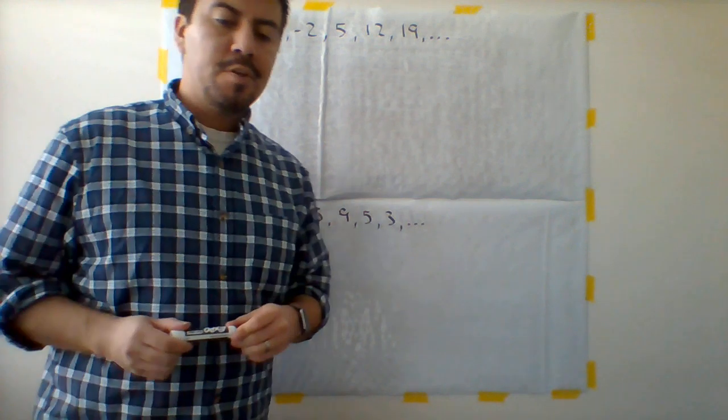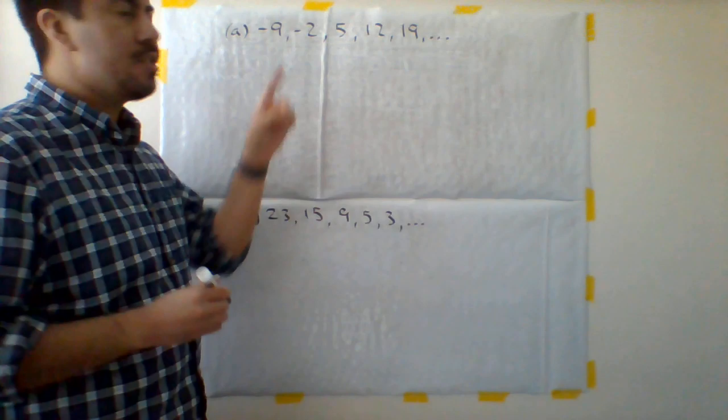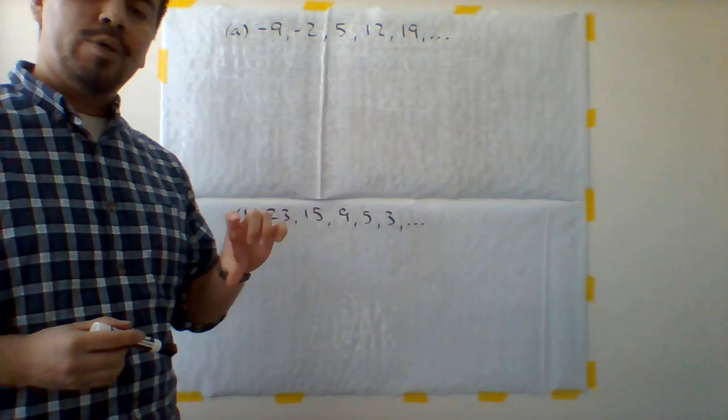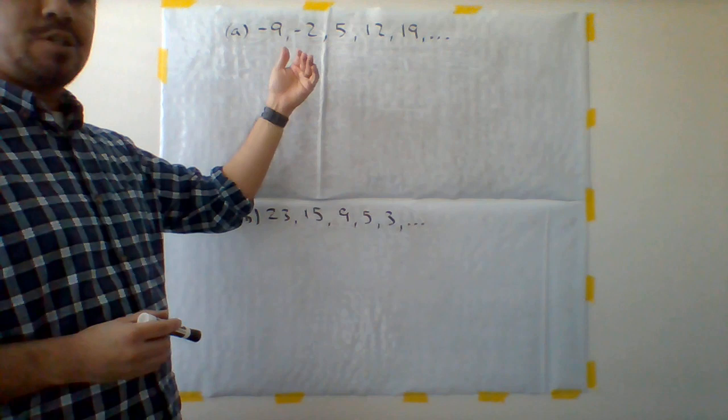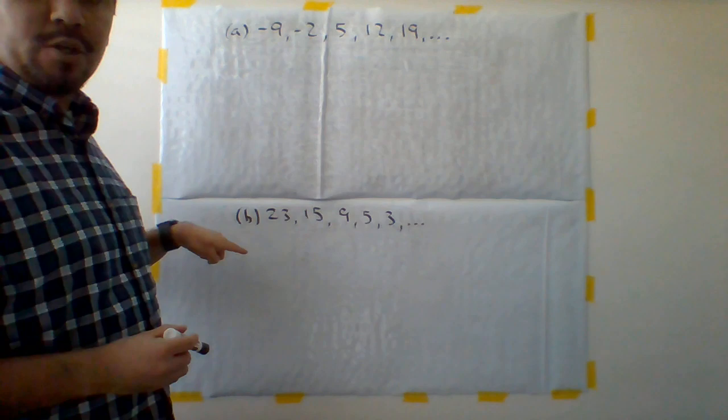In this video I want to show you how to identify arithmetic sequences. Remember we have sequences which is an ordered list of numbers separated by commas. We're trying to find out whether it's an arithmetic sequence. Remember if they have a common difference, the distance between each sequential term is going to be the same. I'm going to show you how to do it. We have two different problems that we're going to work through.